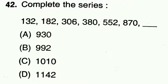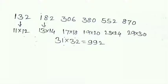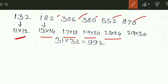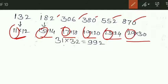This is a number series question. We solve it like this: 132 = 11 × 12, 182 = 13 × 14, 306 = 17 × 18, 380 = 19 × 20, 552 = 23 × 24, 870 = 29 × 30. The numbers 11, 13, 17, 19, 23, 29 are all prime numbers.